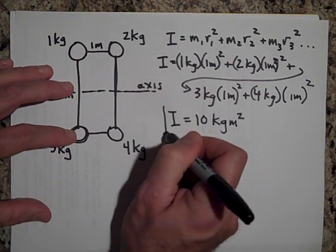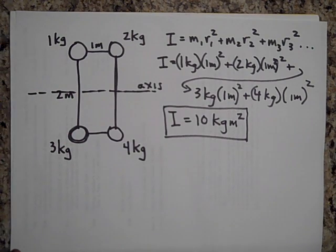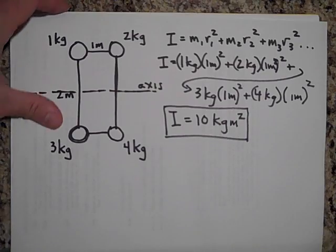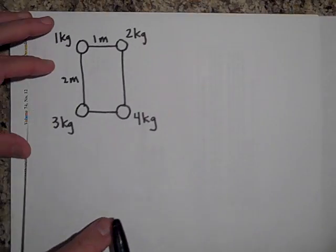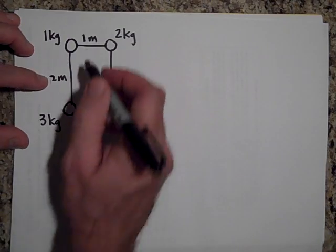So I, the rotational inertia for this, is 10 kilograms meters squared. That's the units for I. Now I want you to notice something. If we choose a different axis, say we choose the following axis for this instead of that one, we use this axis.